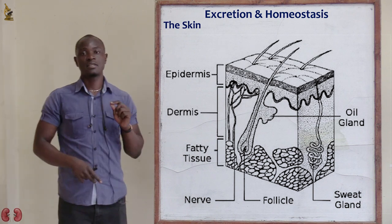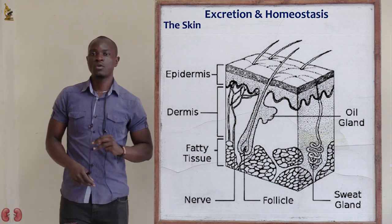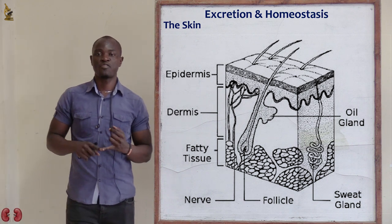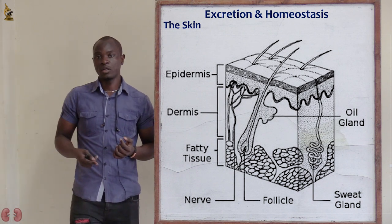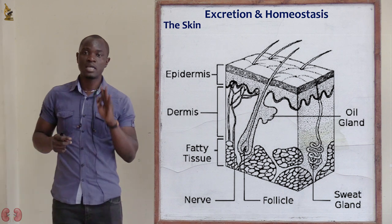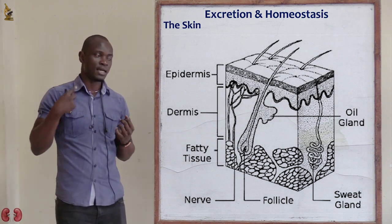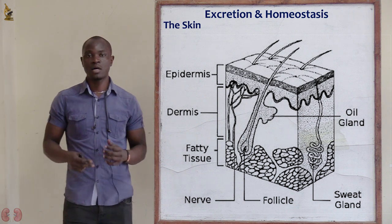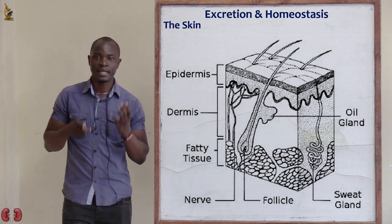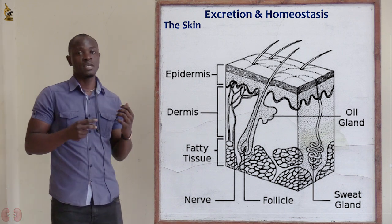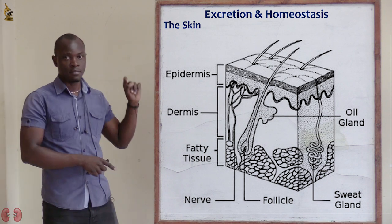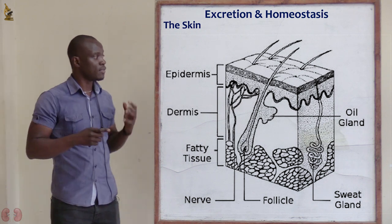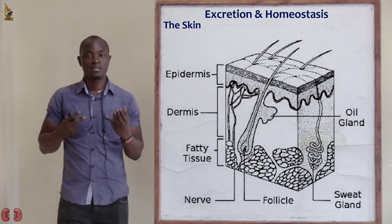The skin is divided into three main parts. In primary school, we studied that the skin is made up of two parts — the epidermis and the dermis only. But now in high school, we see that the skin is divided into three main parts: the epidermis, which is found on the external part; the dermis, which is the middle and thick part; and the subcutaneous fat layer, which is found beneath the dermis, as you can see in the diagram.